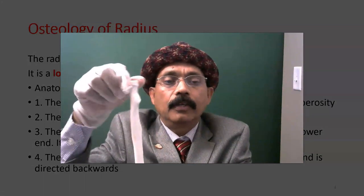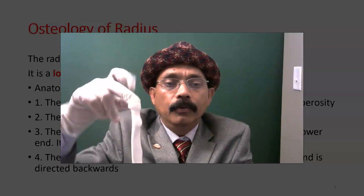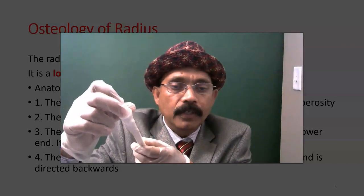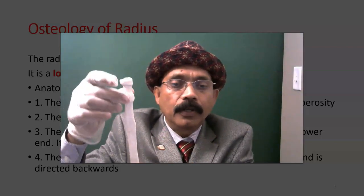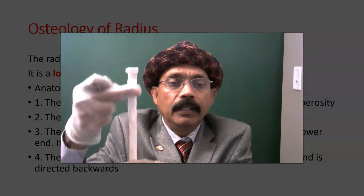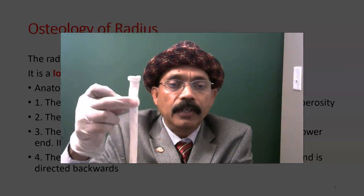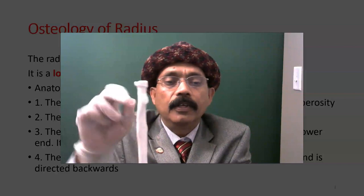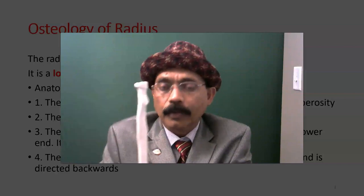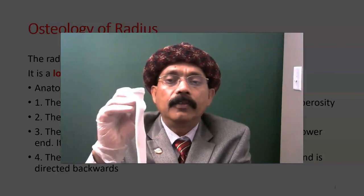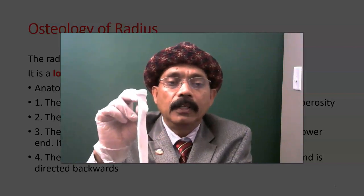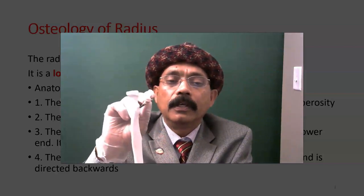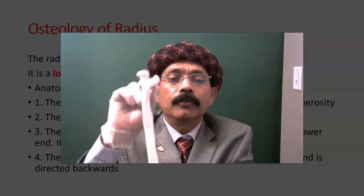The head is circular with the upper part showing a little concavity. This is the neck. This is the radial tuberosity here.